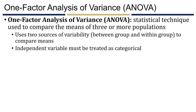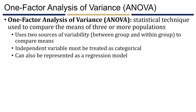In one-factor ANOVA, the independent variable must be treated as categorical, and you're not going to have any quantitative predictors. We can also formulate this as a regression model.